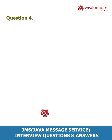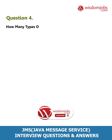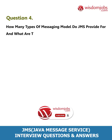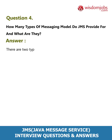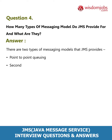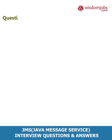Question 4: How many types of messaging models does JMS provide, and what are they? Answer: There are two types of messaging models that JMS provides — Point-to-Point (queuing) and Publish-and-Subscribe.